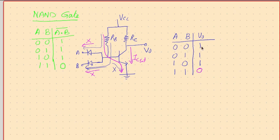So for zero-zero you get a high, for zero-one you get a high, for one-zero you get a high, and for one-one you get a low. That's exactly what this truth table states, and this truth table is exactly the same as the NAND truth table. Hence we can call this circuit a NAND gate.